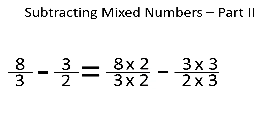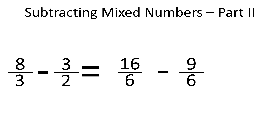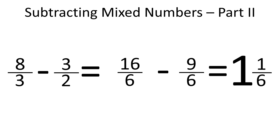So 8 over 3 becomes 16 over 6. To convert 3 over 2 to an equivalent fraction with 6 in the denominator, we multiply both the denominator and numerator by 3. So 3 over 2 becomes 9 over 6. Now we can subtract the numerators: 16 minus 9 is 7. So we have 7 over 6, which is an improper fraction, or 1 and 1 over 6 in its simplest form.